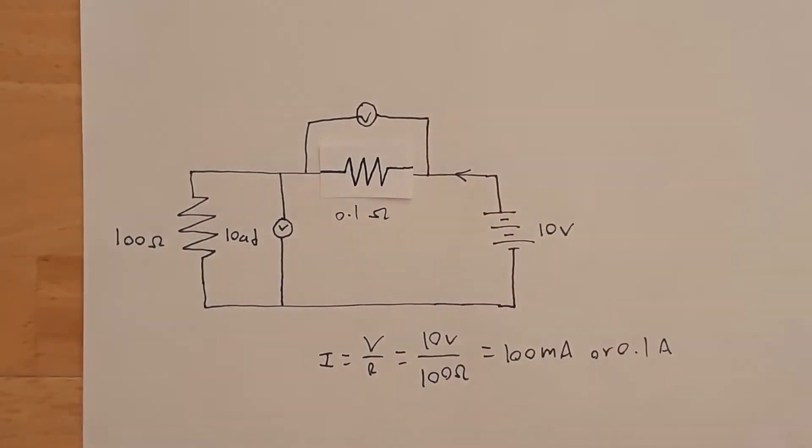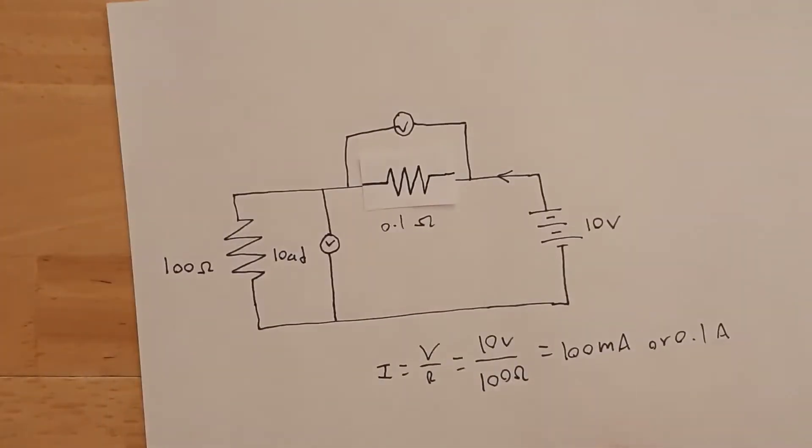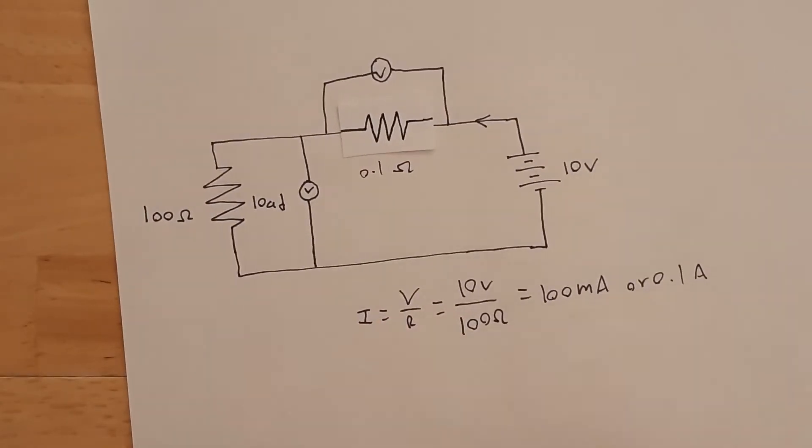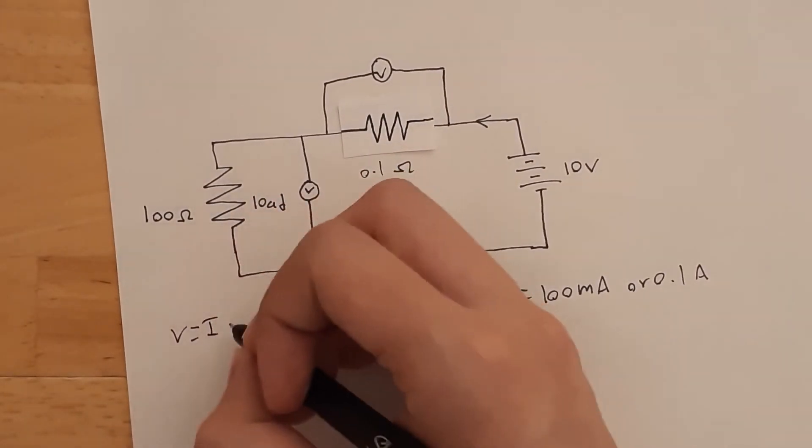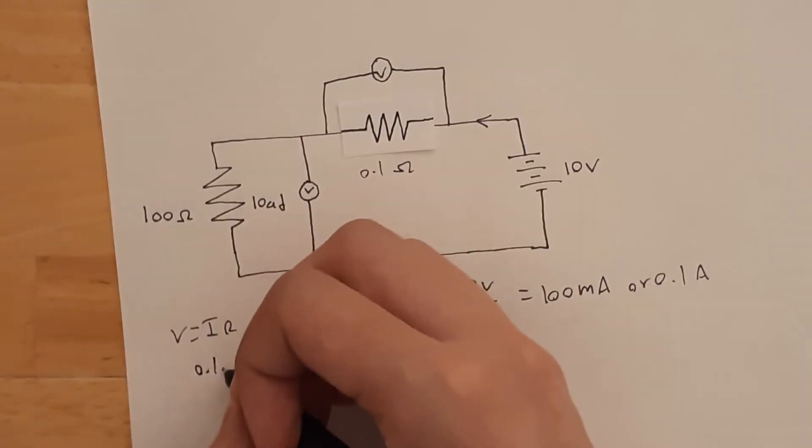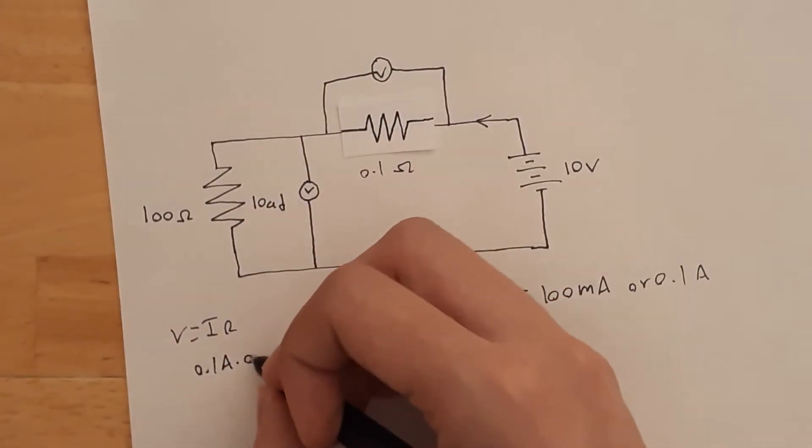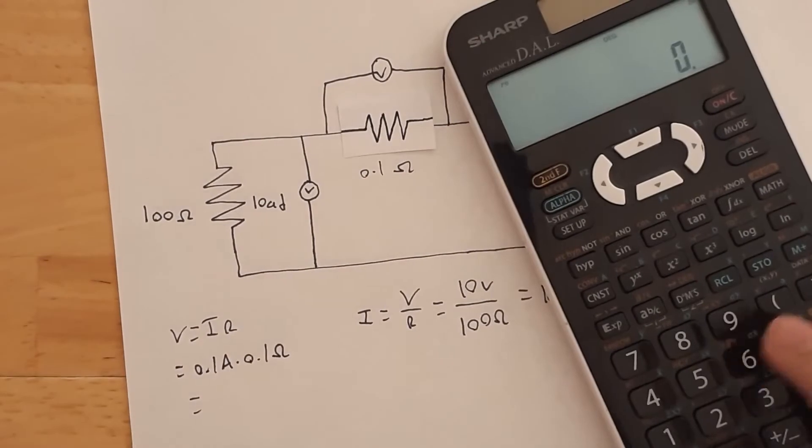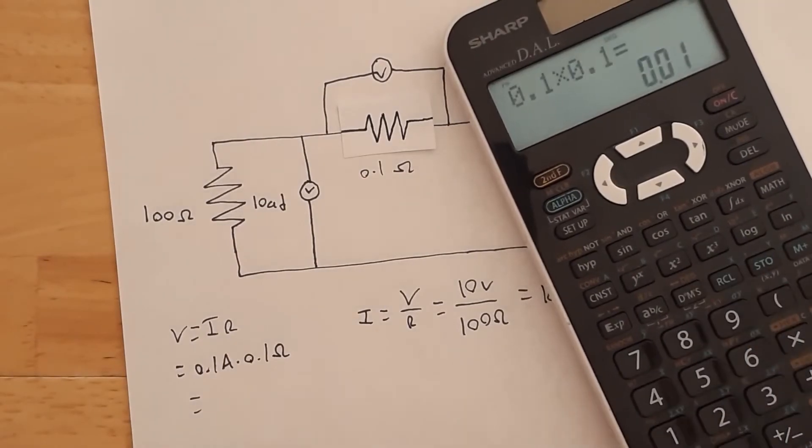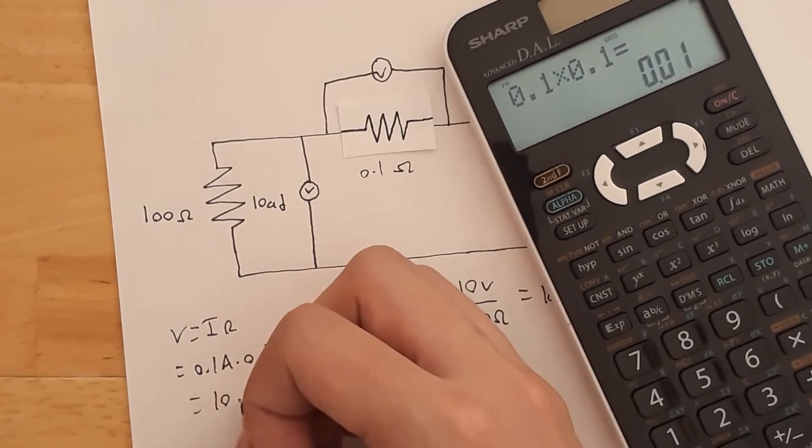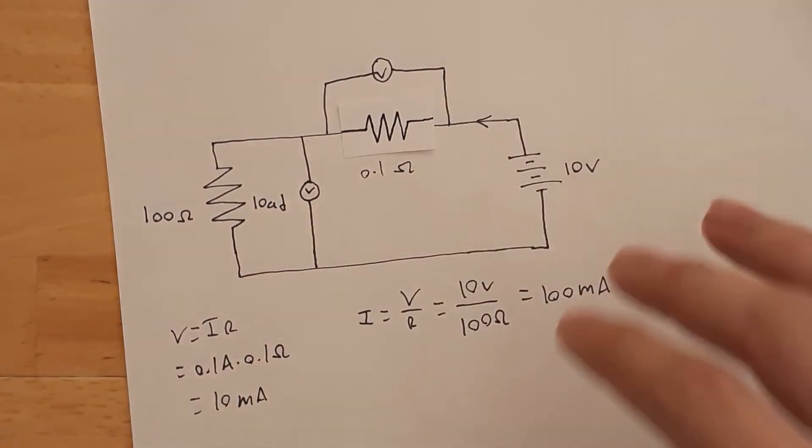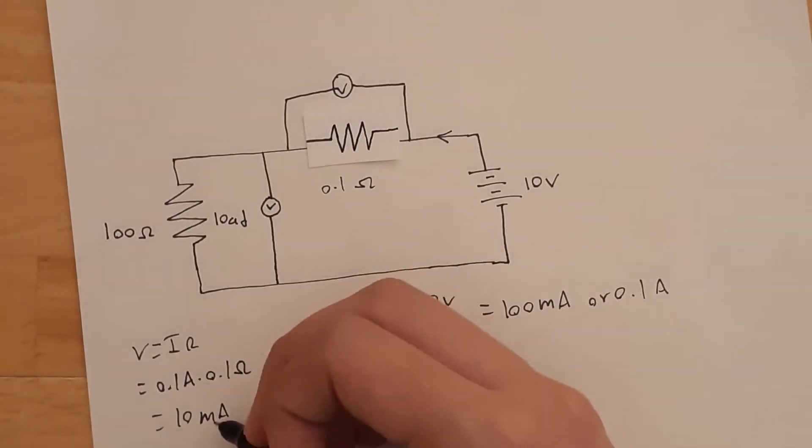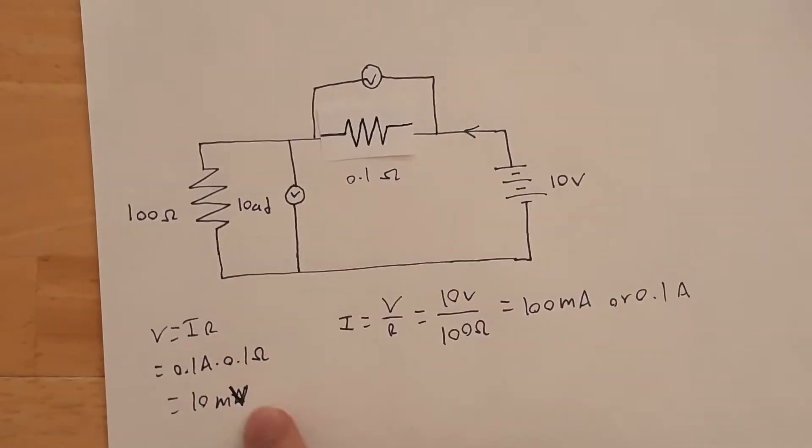If we want to calculate the voltage across the resistor, it's just this equation written slightly different. So it's V equals I R. Since we know it's 0.1 amps times 0.1 ohms, that equals... 10 millivolts. That's why I was confused. 10 millivolts.